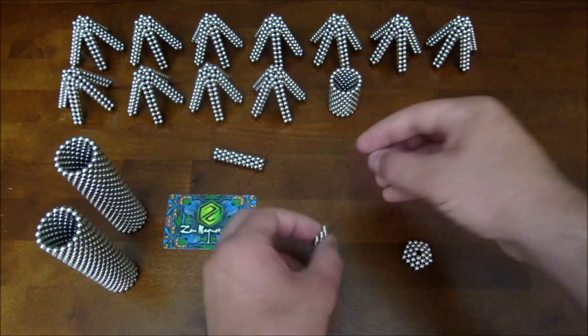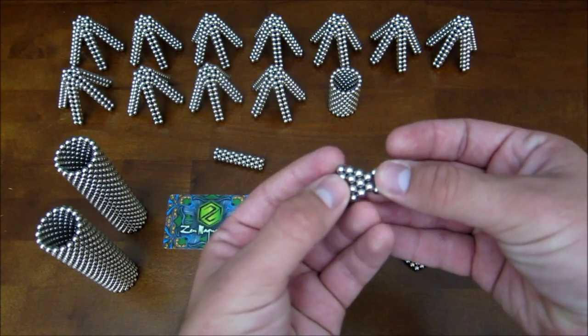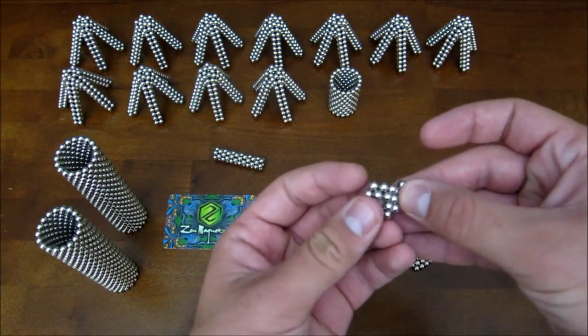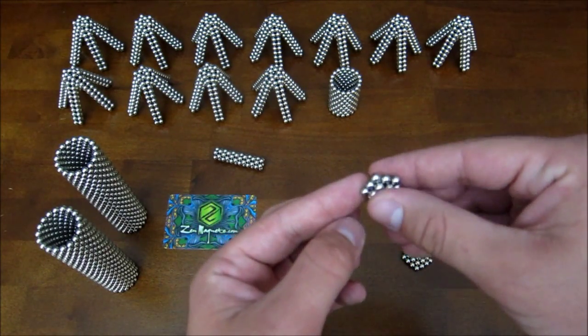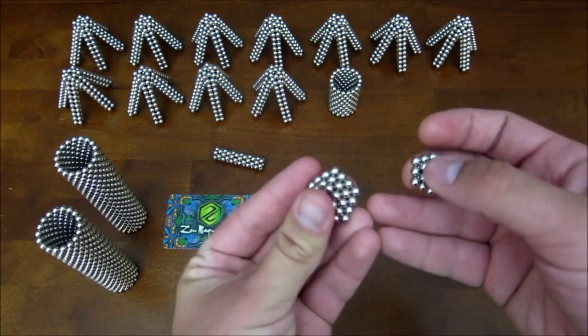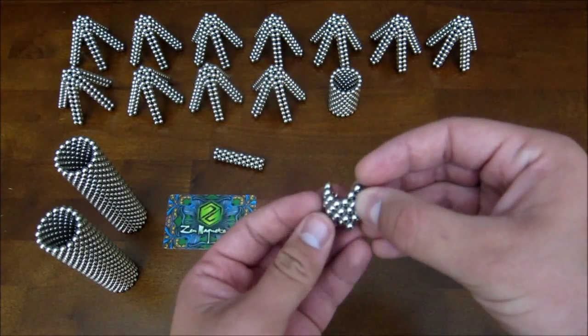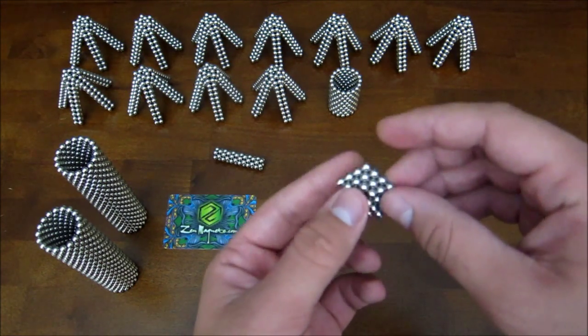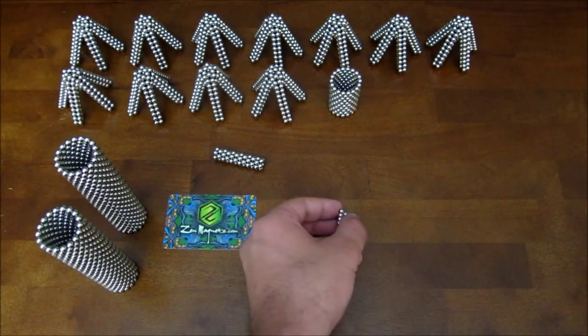And you take the smallest one and the middle one and put them together like that. They add together like this. Then you can take this and add them together into a small pentagonal bipyramid. The edge length is 4 on that. This outside edge is 4 magnets long.